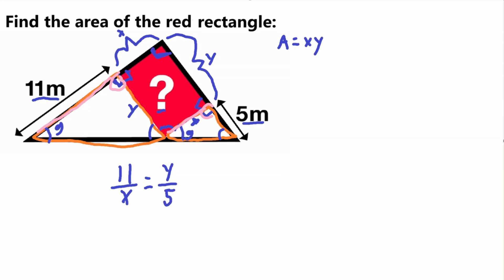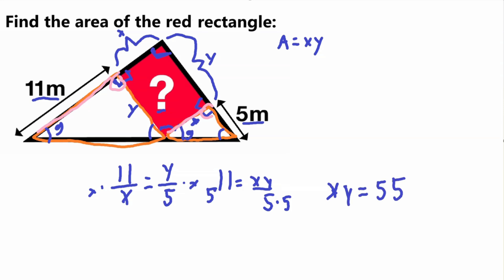Now let's work with this. I'm going to multiply both sides by x, giving us 11 equals xy over 5. Now we multiply both sides by 5, so we get that xy equals 55. But xy is exactly what we were trying to find — that is the area of the rectangle. So 55 meters squared is our answer.